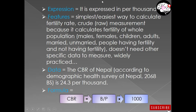Now, what are the features of CBR? As already stated, 'crude' means very raw, simple, and easy. This is the simplest and easiest way to calculate fertility rate — it is the primary, basic type of fertility rate. It is called crude or raw because it calculates fertility of the whole population, which includes males, females, children, adults, married, and unmarried people — those having fertility and those not having fertility.